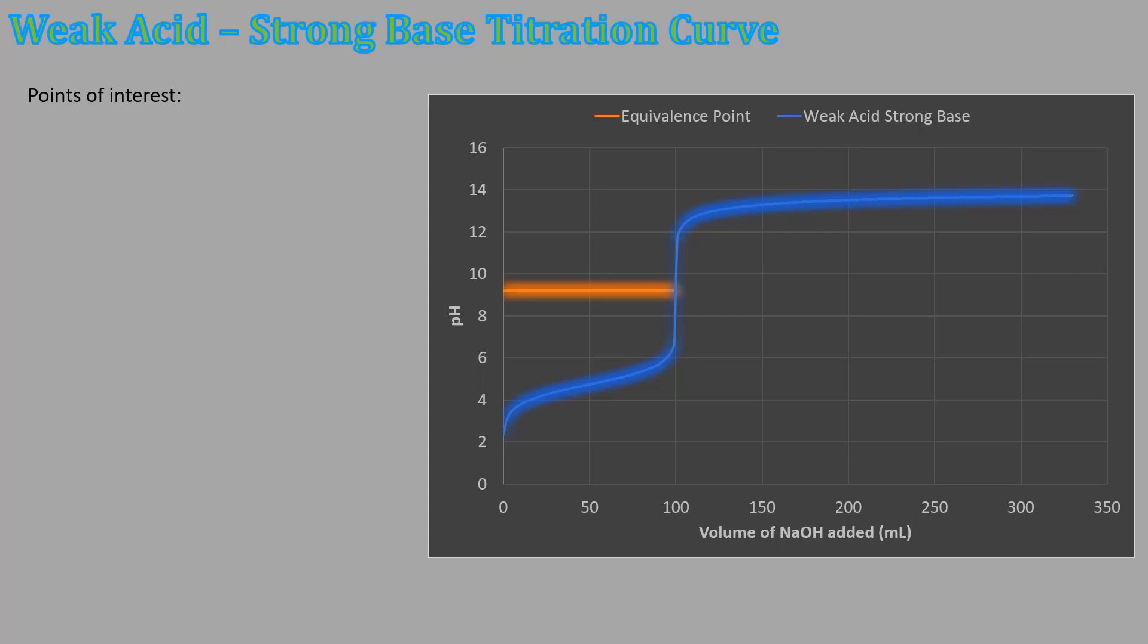So points of interest. So right here at the very, very beginning at this point, we haven't added any base. And so what I have in solution, so this would be point one. What I have in solution right there is just the weak acid. So we've made, there's a little bit of conjugate base, not much, and a little bit of H3O. Again, not necessarily all that much, more than water, but not much more. And we have a pretty low pH because of that amount of H3O.